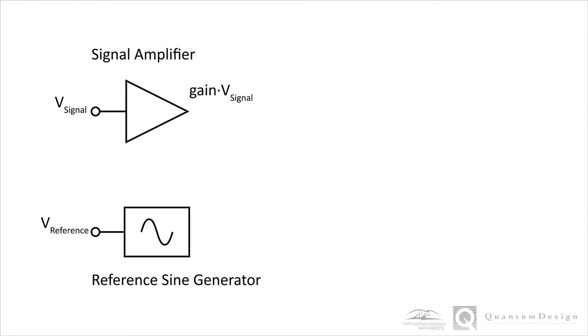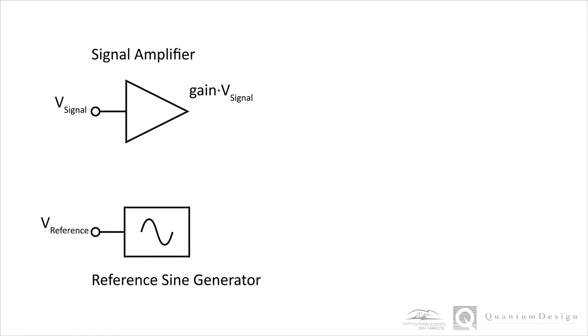Next, we need a sine wave generator, or an oscillator, that generates the reference signal that we control. The amplified signal and the reference are then mixed, meaning that they are multiplied with one another. This mixed signal then goes through a low-pass filter, and a final output signal is obtained. This output is a much better measurement than what we just performed, and I'll take some straightforward mathematics to explain why.